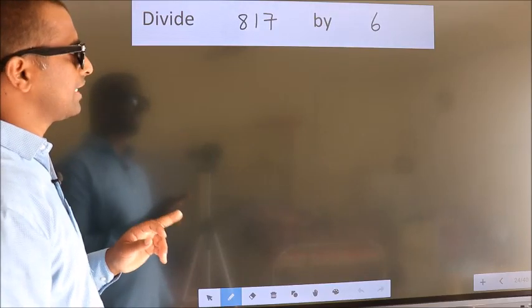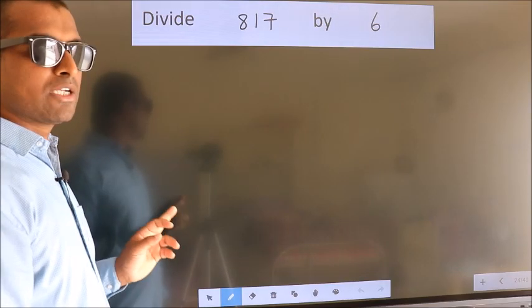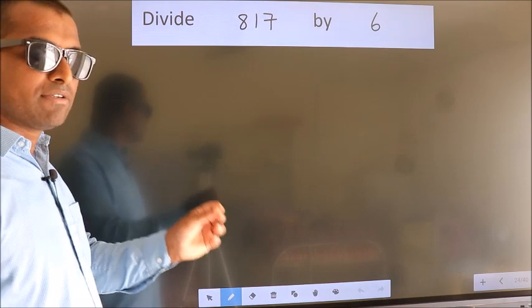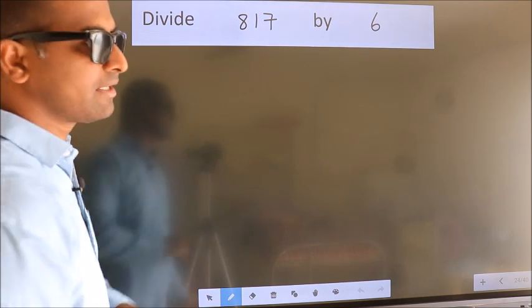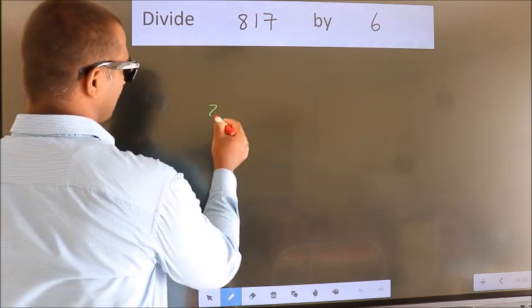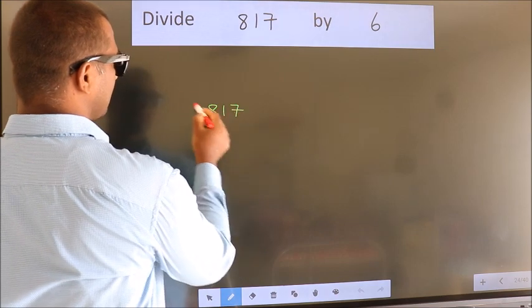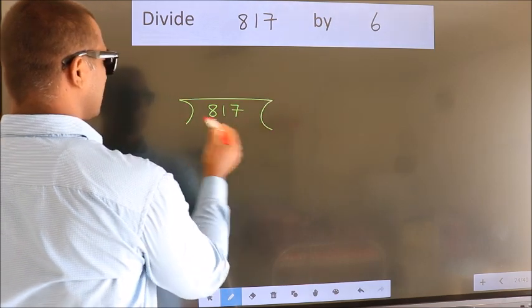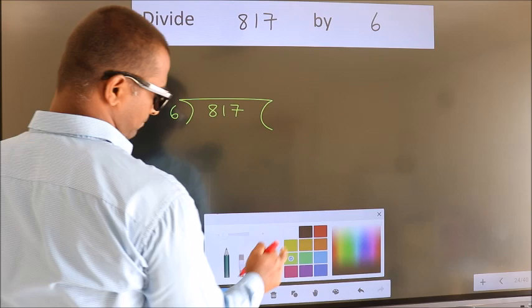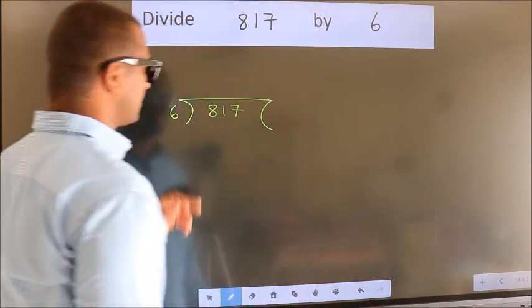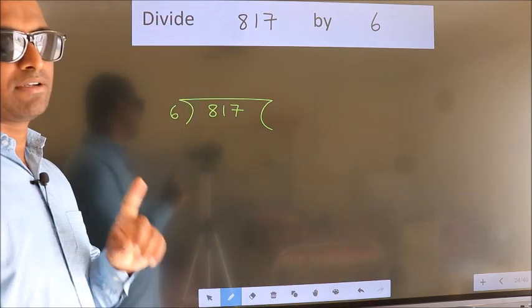Divide 817 by 6. To do this division, we should frame it in this way. 817 here, 6 here. This is your step 1.